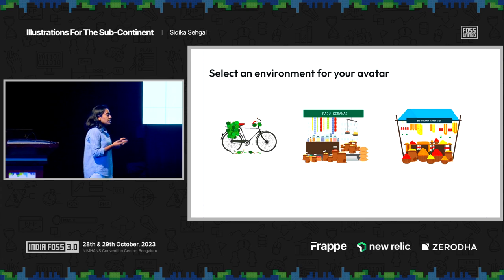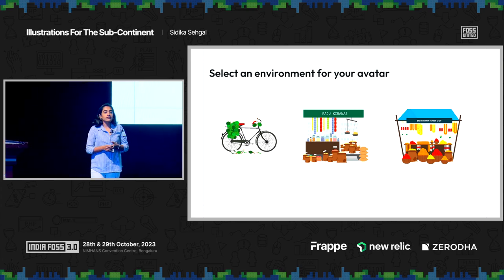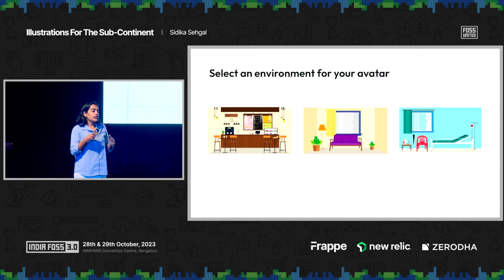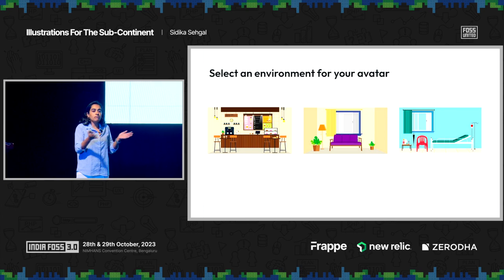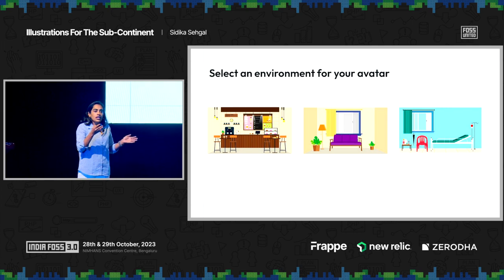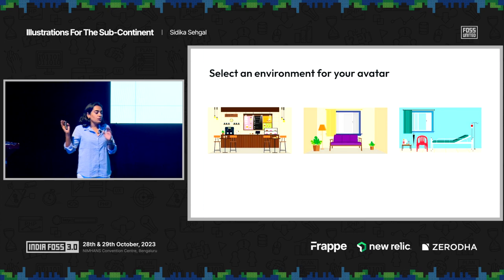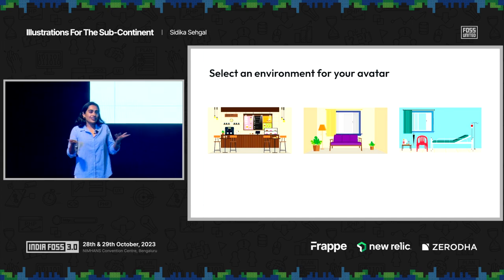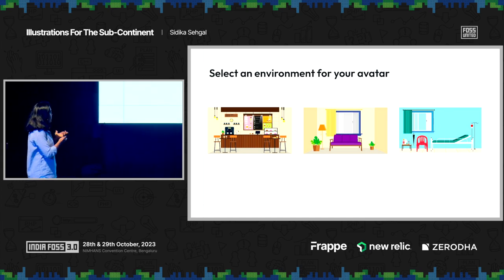After that, we started thinking about where these avatars would be used and created a couple of environments for them — some rural environments and some urban environments as well. Everything you see here is again plug and play. So you see that Neil Kamal chair in the hospital room — if you want to remove that, just drag it out of the illustration. If you want to shift the lamp in the second illustration, totally possible.